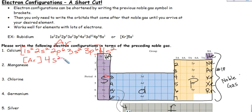4s2. There, done. Argon, 4s2. That's the noble gas shortcut for electron configurations.